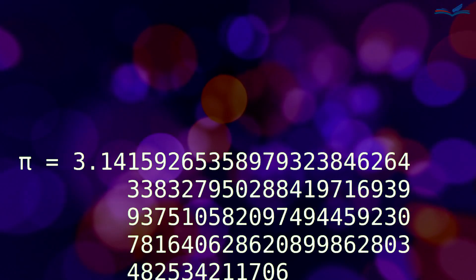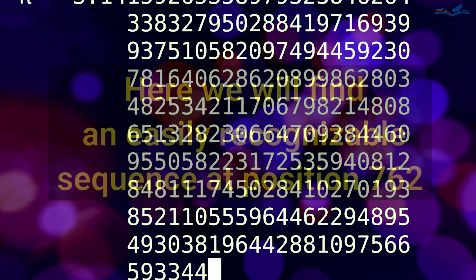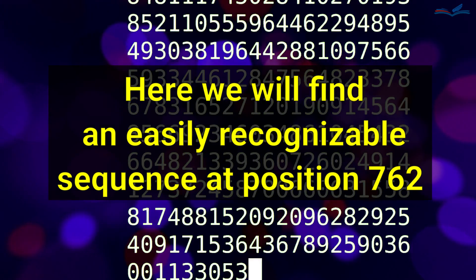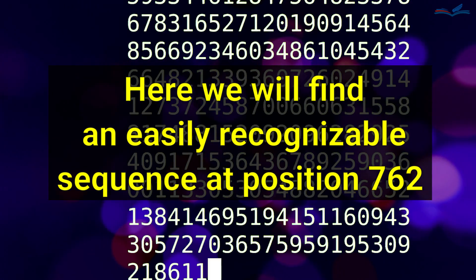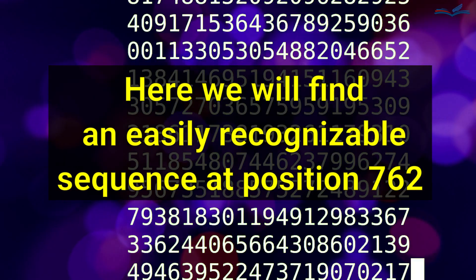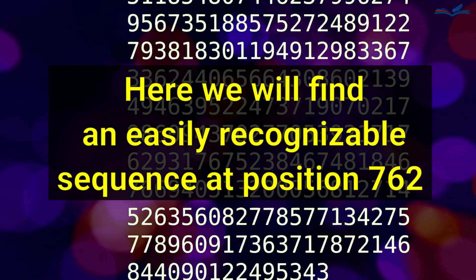If the universe is not just a random occurrence, perhaps we could uncover a hidden message within the digits of this constant. In fact, there is one strange observation related to the constant pi. This number contains a sequence of six consecutive nines, 999999, starting from the 762nd decimal place.